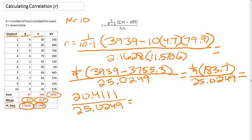And the last thing for us to do is to divide 25.0249 into 20.4111. And if we do that, we get 0.8156, or rounding to two decimal places, we get 0.82. So our R, or our correlation coefficient for this data set, is 0.82.